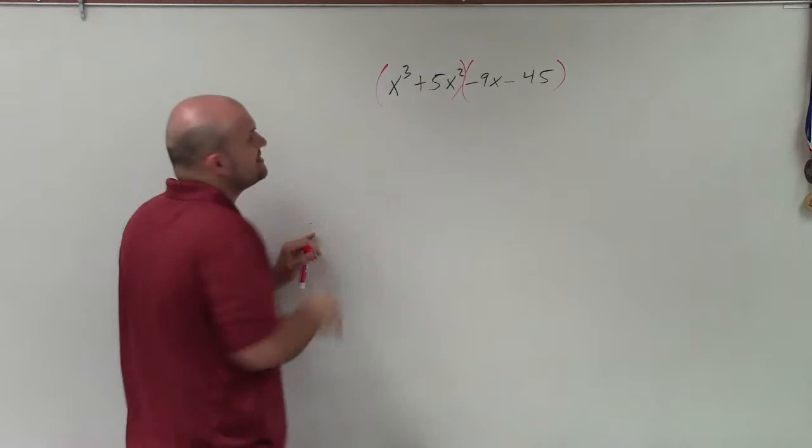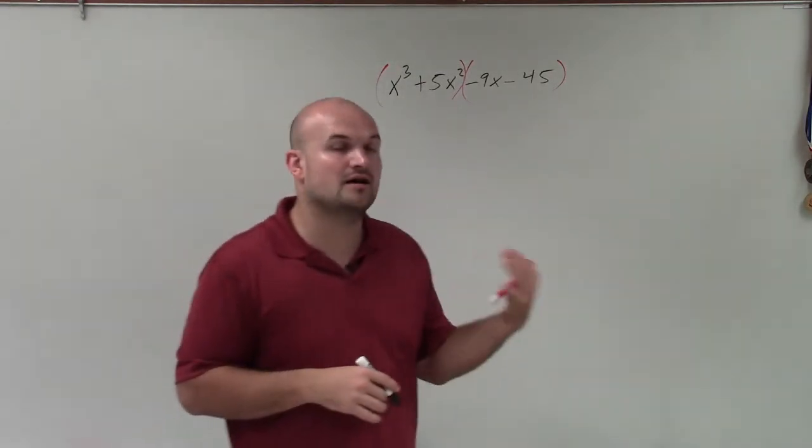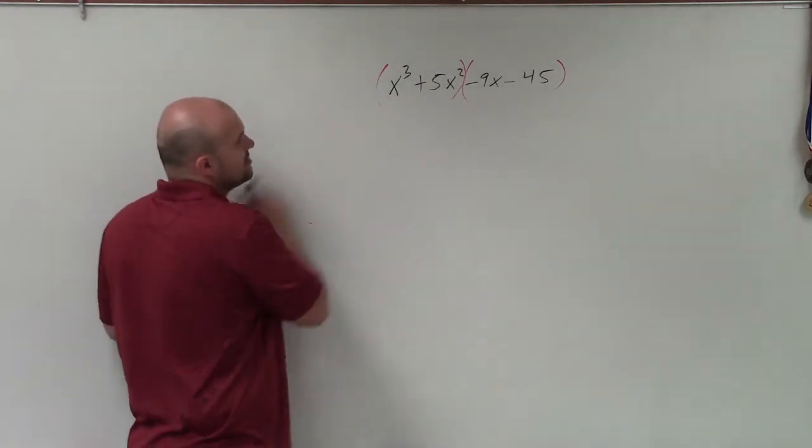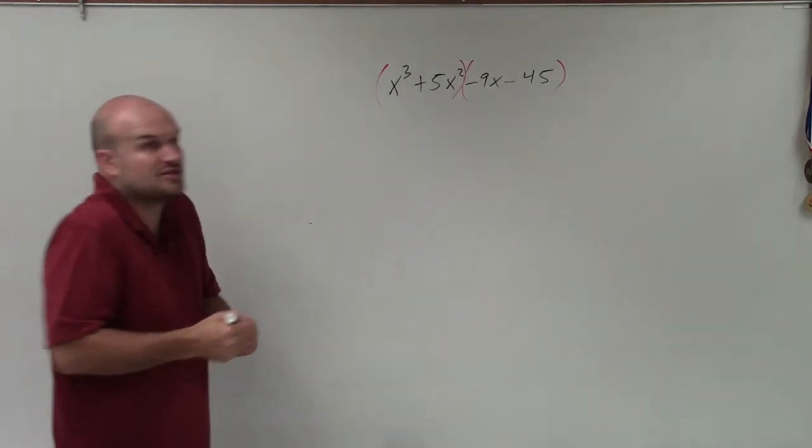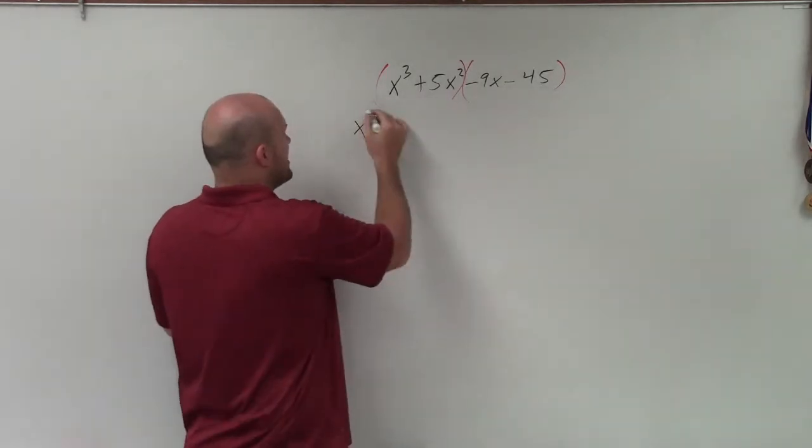In this case, though, we see that we actually have some common terms in our first two terms and our last two terms. The common term of x cubed plus 5x squared is just going to be x squared. So I can factor out an x squared.